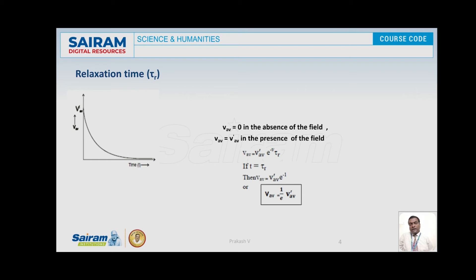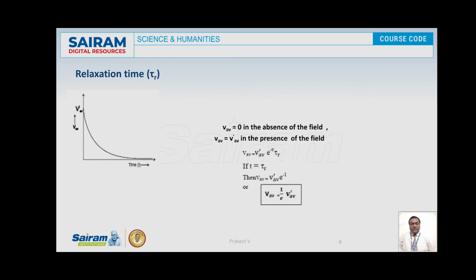This is expressed mathematically as Vab = Vab_dash × e^(−t/τr), where t is the time counted from the instant the field is turned off and tau r is the relaxation time. If we set tau r equal to t, the equation becomes Vab = Vab_dash × e^(−1), or equivalently Vab = (1/e) × Vab_dash. So relaxation time is the time taken by the electrons to reach a directional velocity equal to 1/e times its value at the moment the field is turned off.